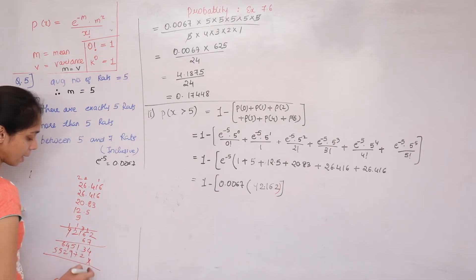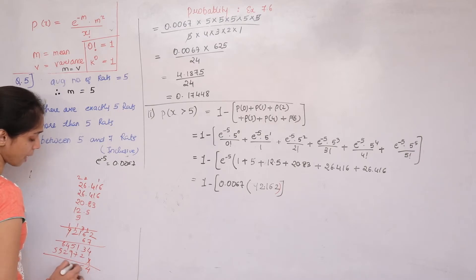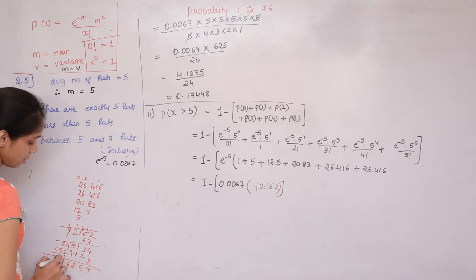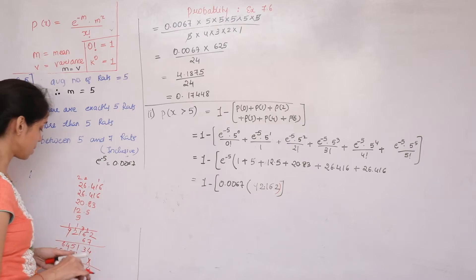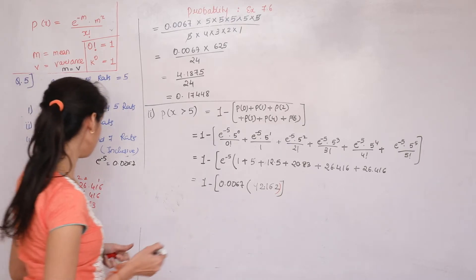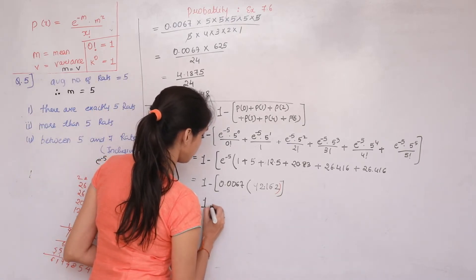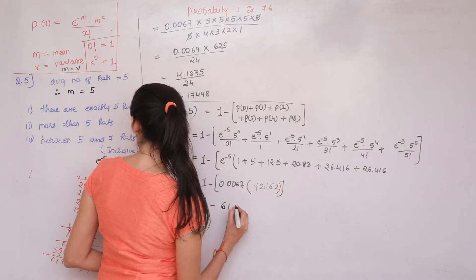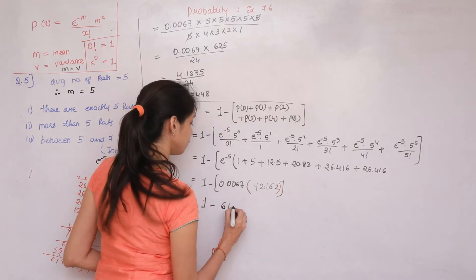Final result: P(X > 5) = 0.3825. For the third condition — between 5 and 7 reds inclusive — as homework, solve P(5 ≤ X ≤ 7) = P(X=5) + P(X=6) + P(X=7) using the same method.